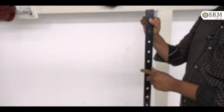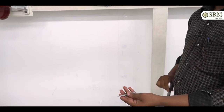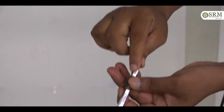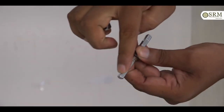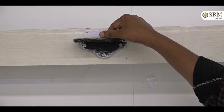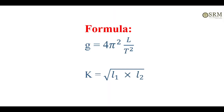Our apparatus are the compound pendulum and knife edges, wall bracket and glass plates. Our formula is: acceleration due to gravity G is equal to 4 into pi square into L by T square.